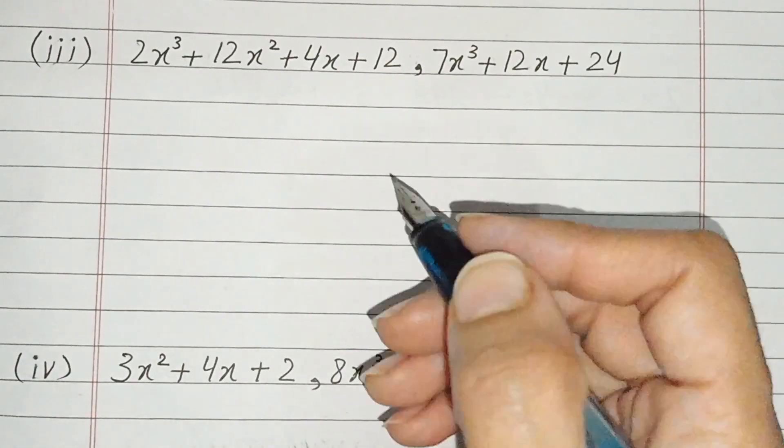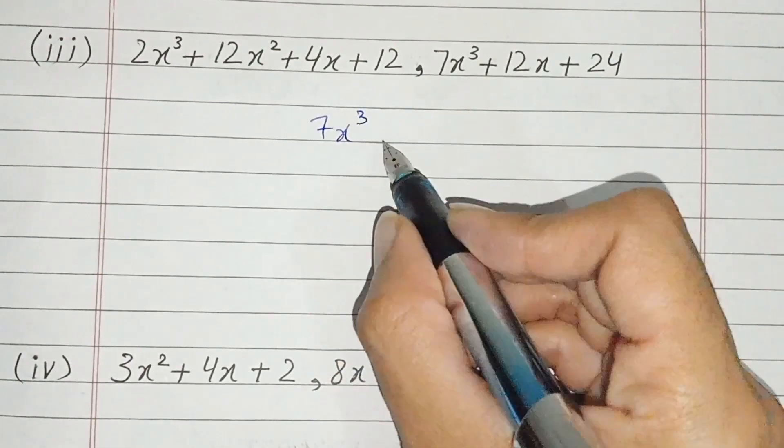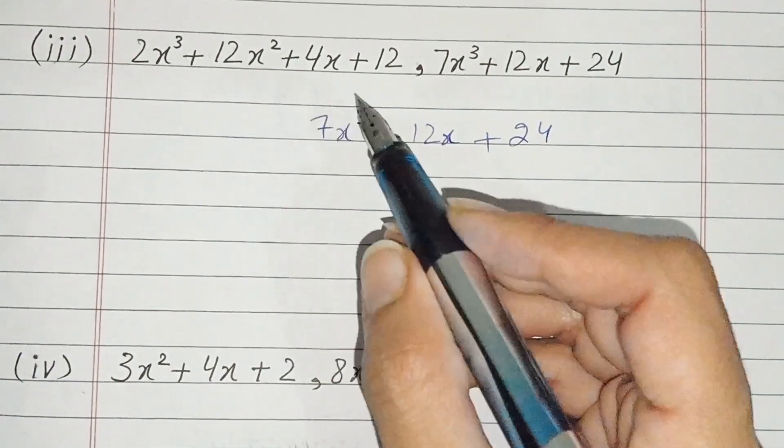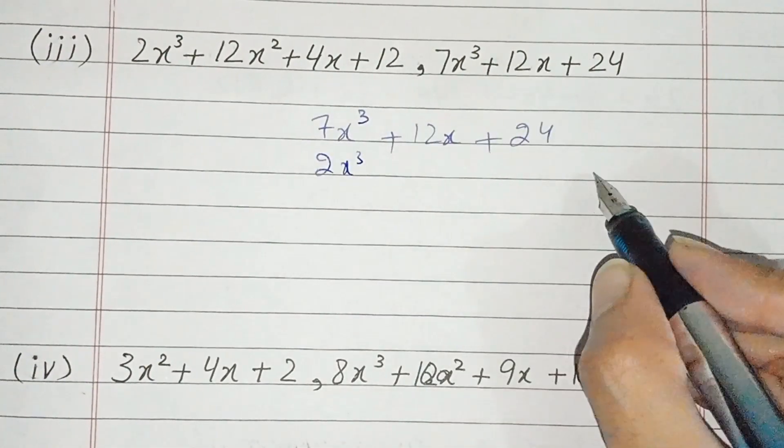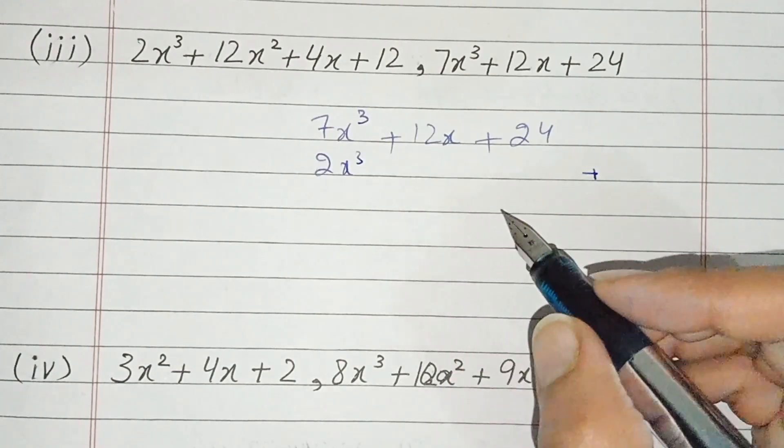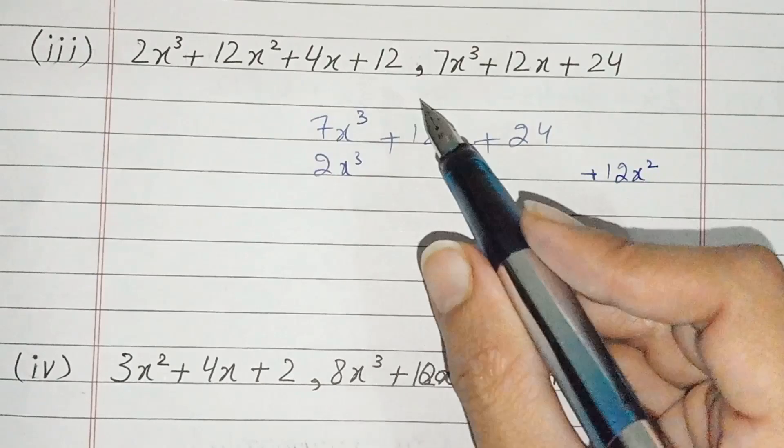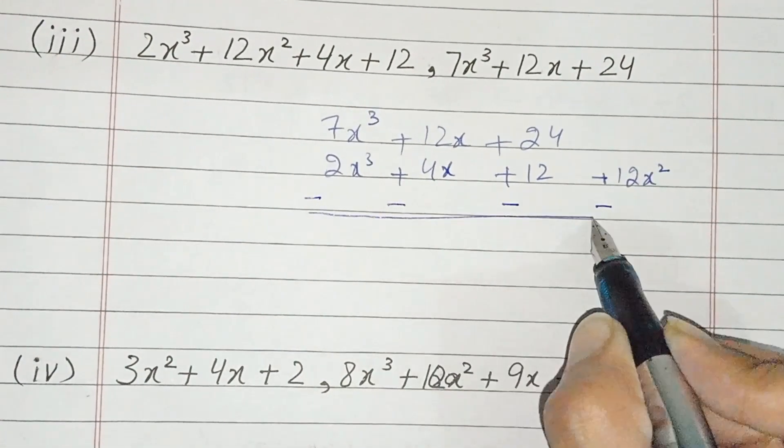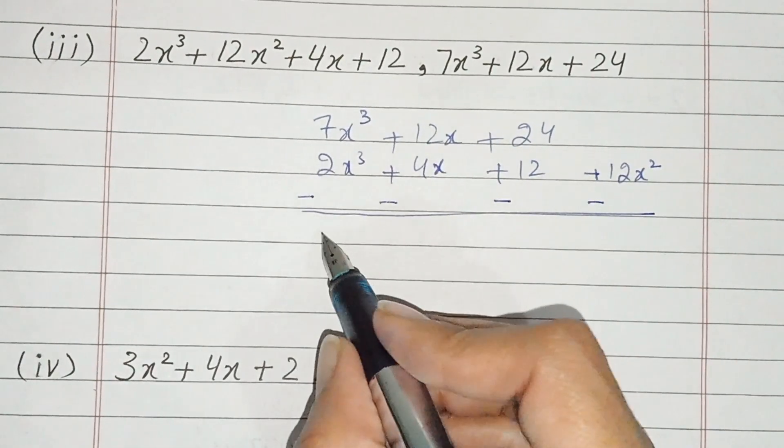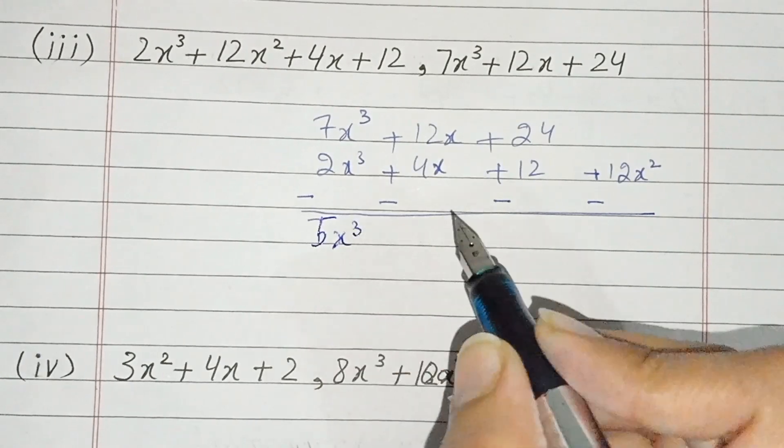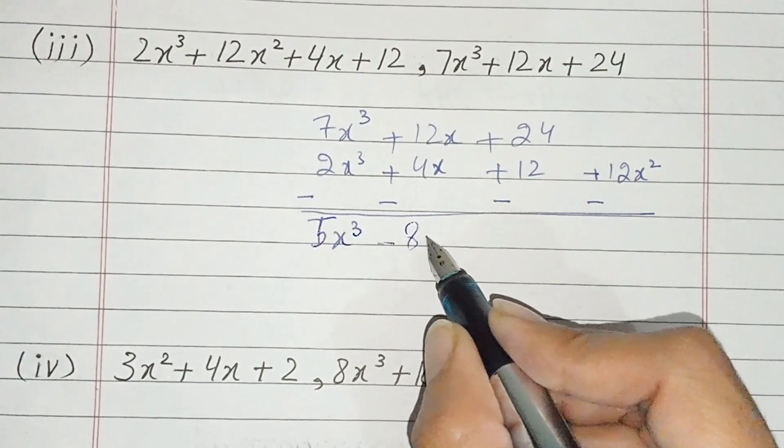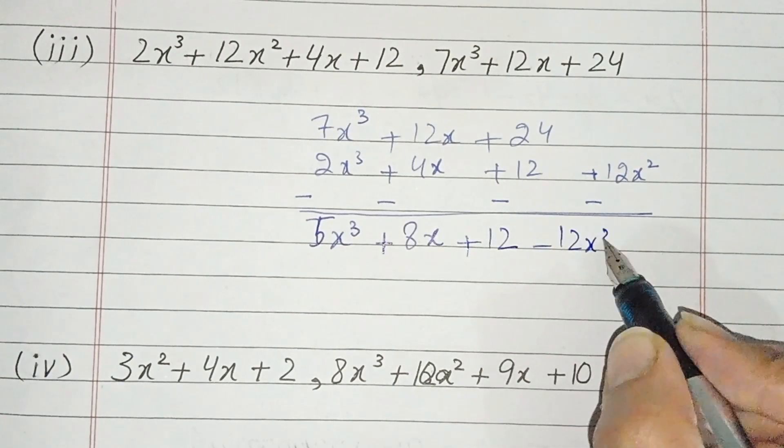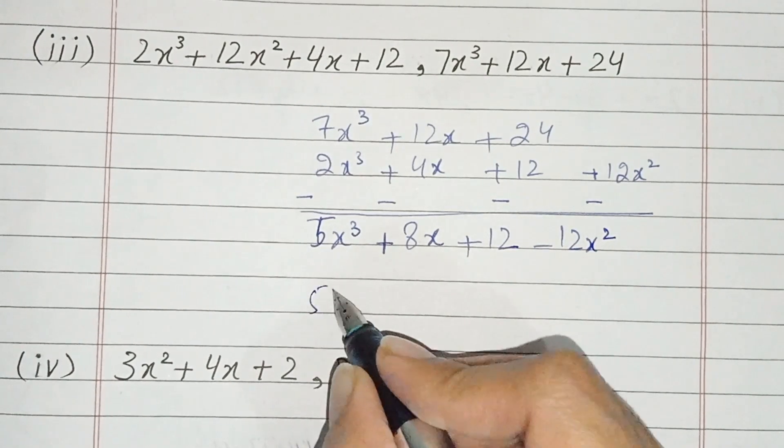Now students third part. This second polynomial we write down: 12x plus 24. Now we have like terms. 2x cube. Now we have x square we can write. We can write side to the right. Plus 4x plus 12. Now we change: minus, minus, minus, minus. This we have minus x square. 5x cube. 12 minus 4, we get 8x or positive sign because bigger value is positive. This is plus 12 and minus 12. x square has been cancelled. We can rearrange and write it down.